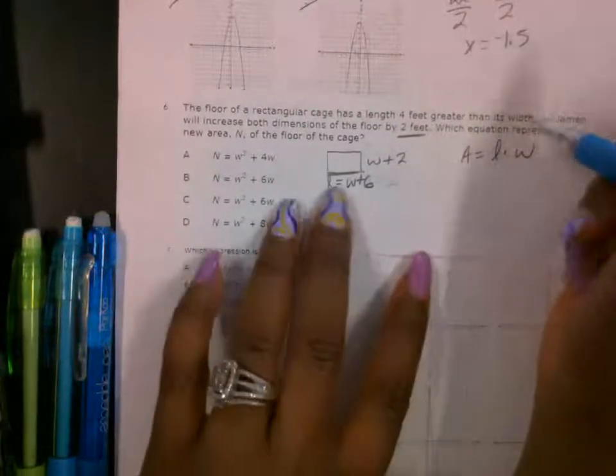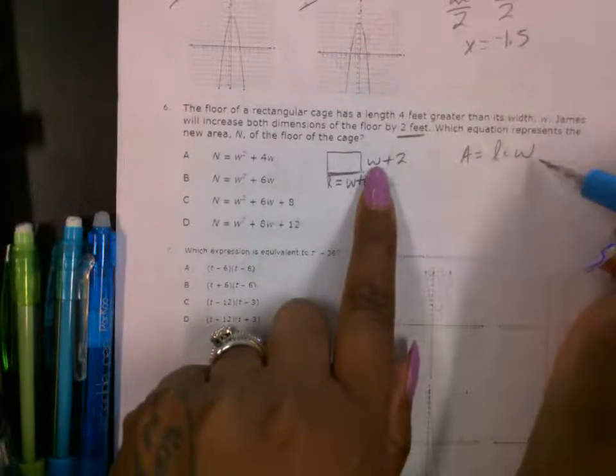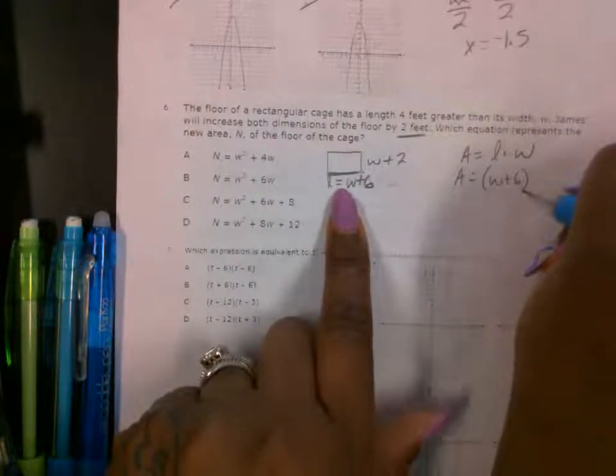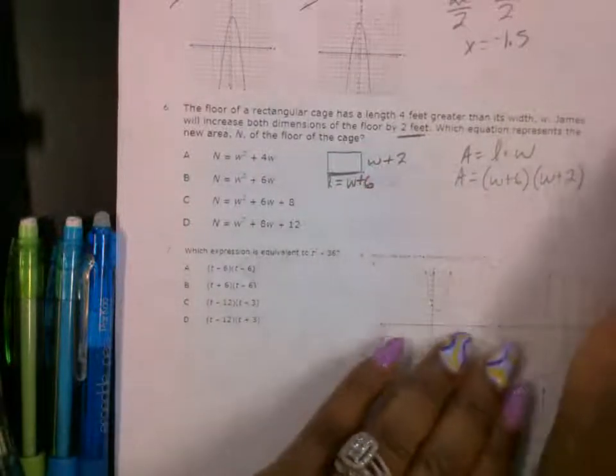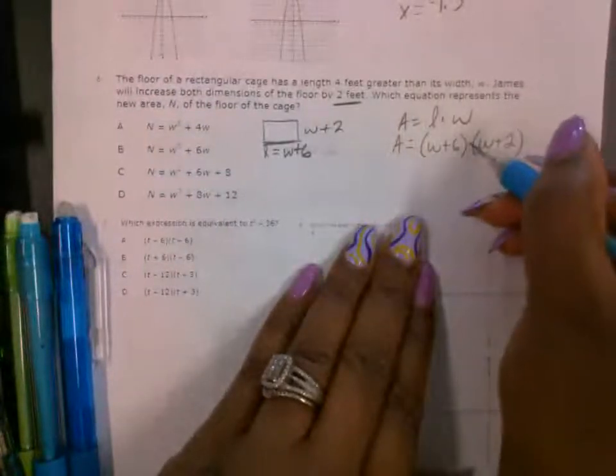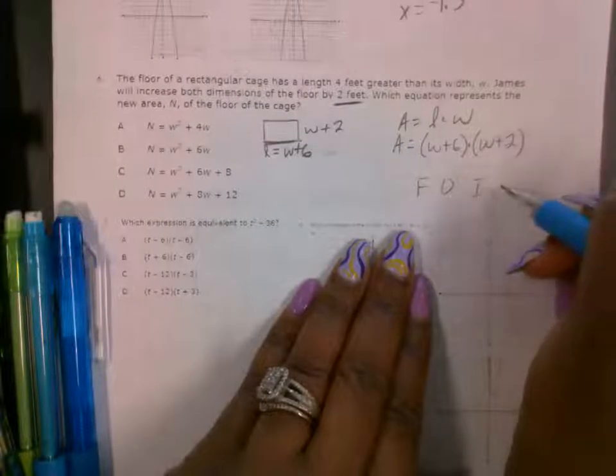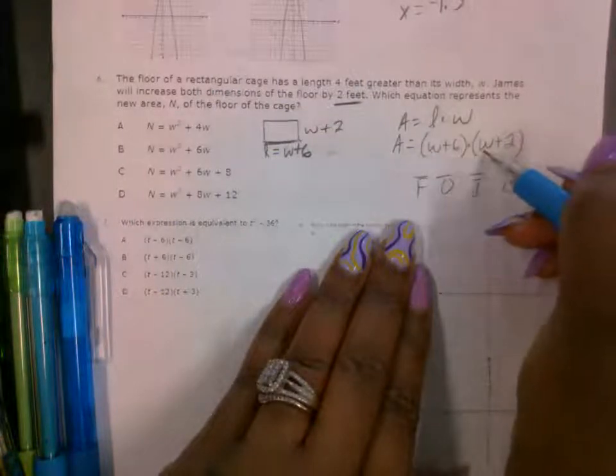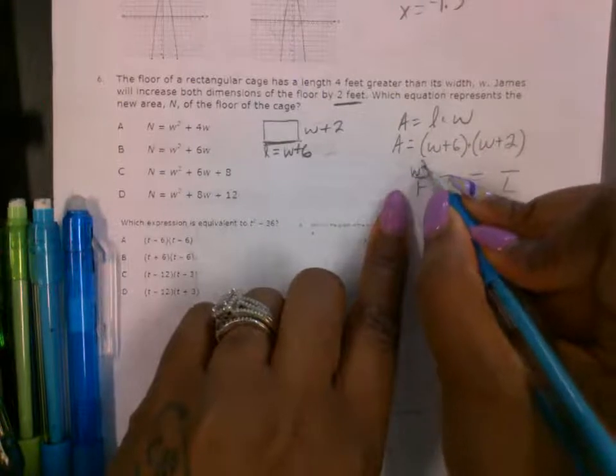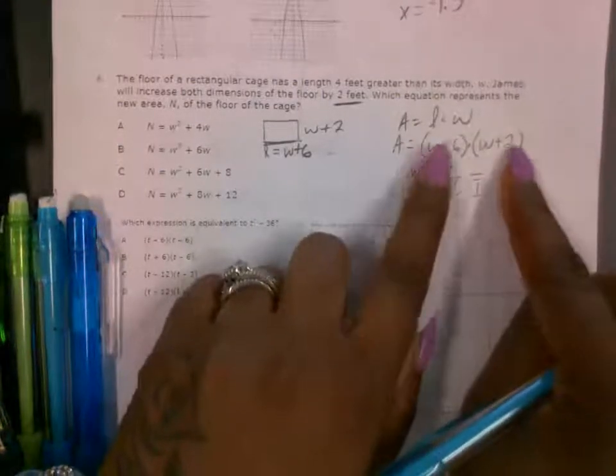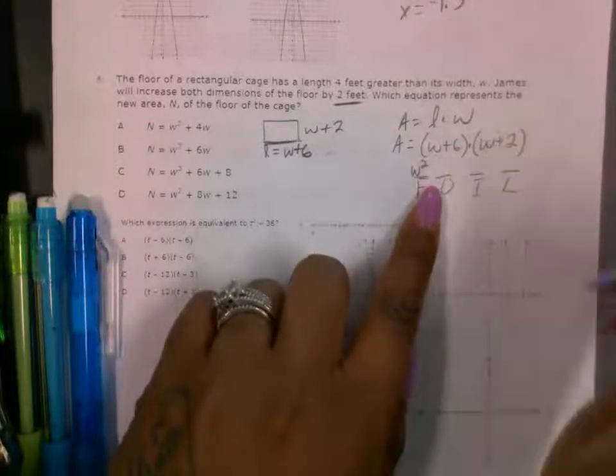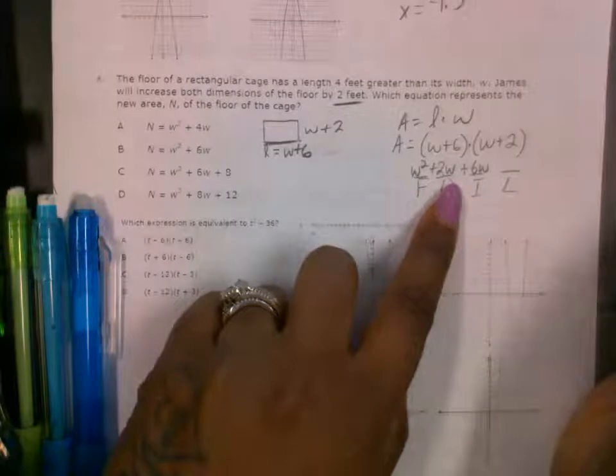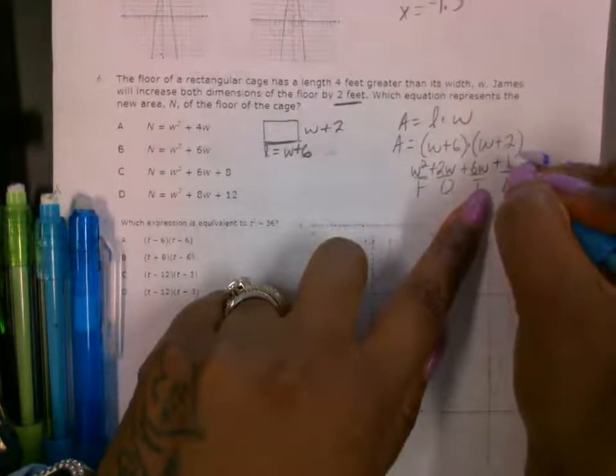Okay, so we're going to substitute this in the place of L, and we're going to substitute the width in the place of the width. So we have A equals, my L is W plus 6, and my width is W plus 2. So in order to solve this multiplication, we're going to use the FOIL method to multiply the two binomials. We have first, which is W times W, so this gives me W squared. Outer is W times 2, which gives you 2W. Inner is 6 times W, which gives you 6W. And last gives you 12, positive 12.